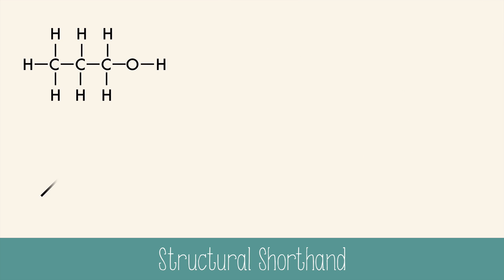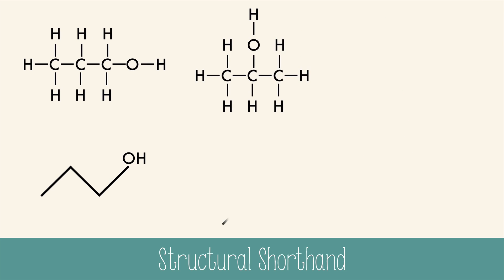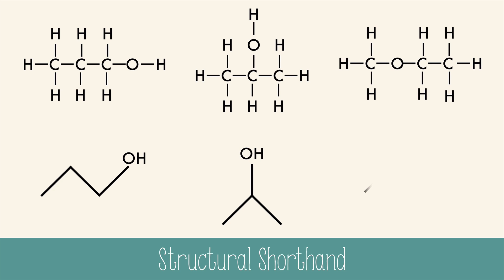Structural shorthand can also make it a little easier to spot isomers, because it isn't so crowded. These are the same isomers that were shown earlier for C3H8O, but with structural shorthand, it's very quick and easy to see that they're all arranged differently, and they truly are isomers.